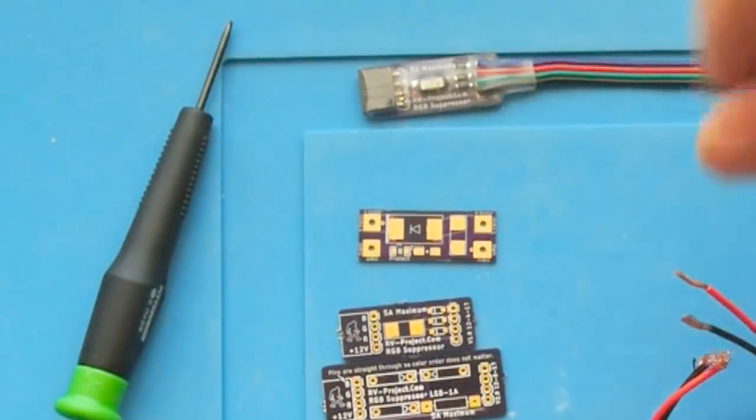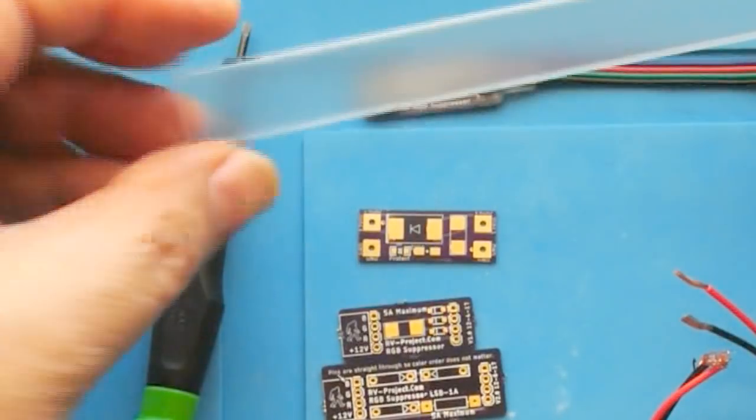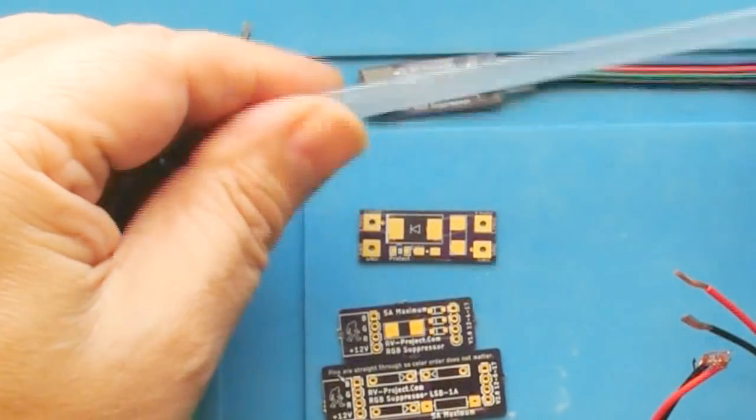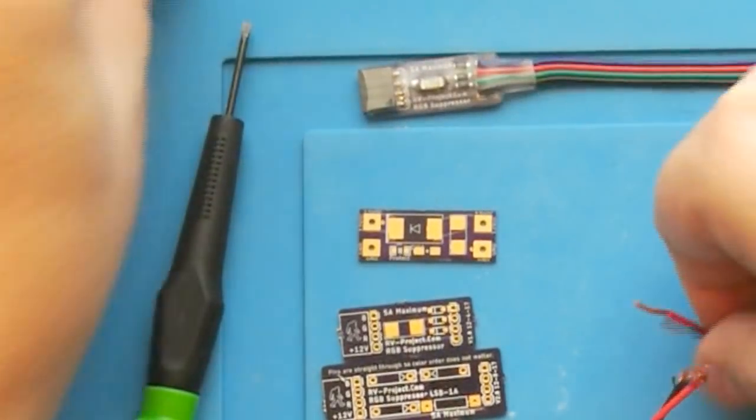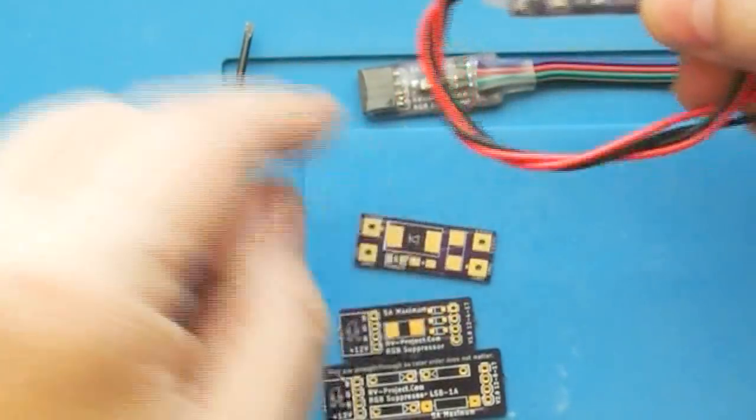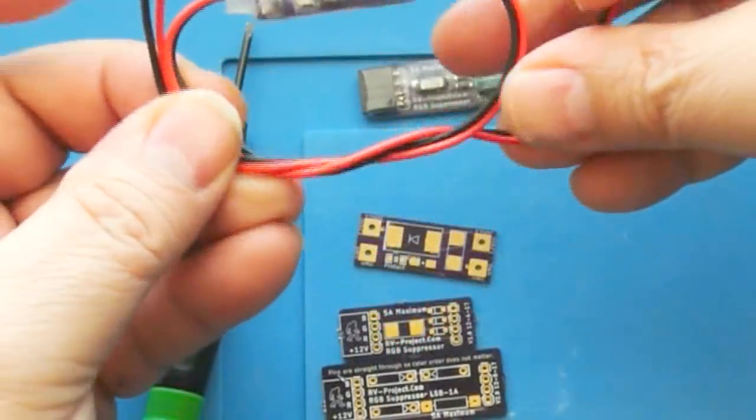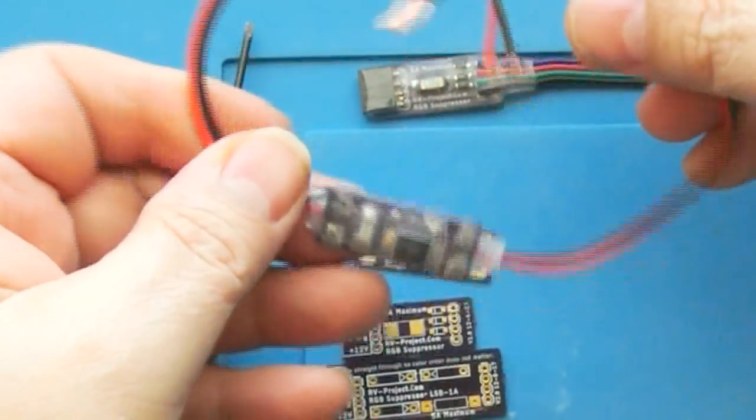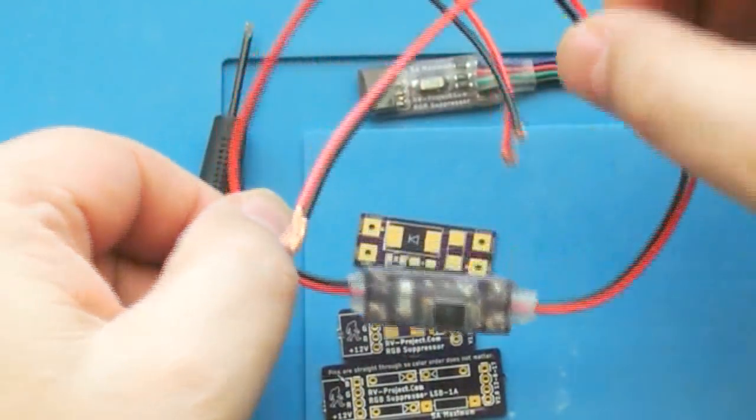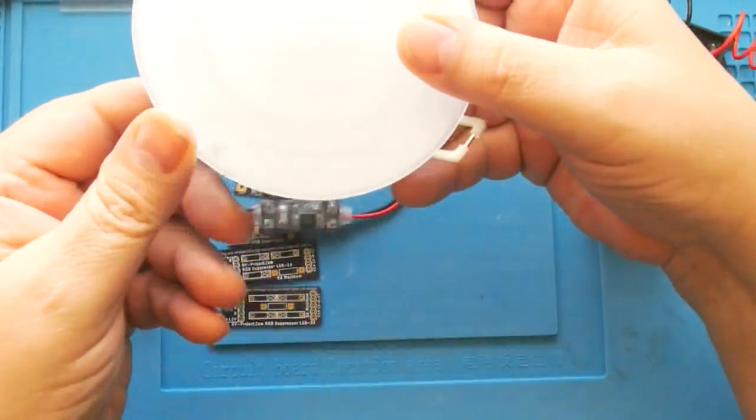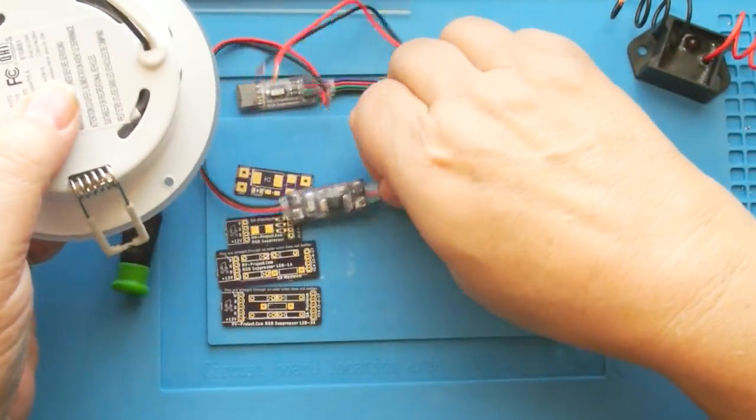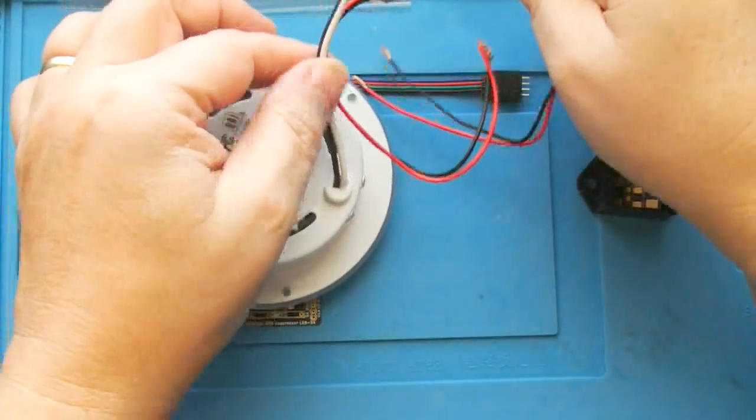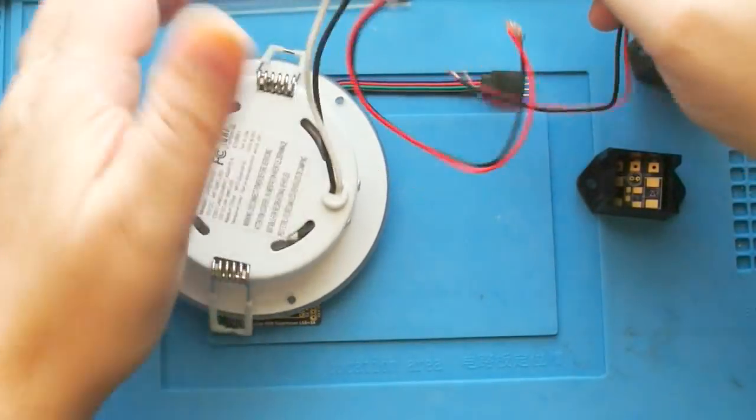When you're done building that and you put the leads on, we have this clear plastic heat shrink that you can put over that, and that's what this is. This is a completed version of this board here. This just goes in line with whatever device you're wanting to protect, for example a puck light like this. You could wire this in line with a puck light and it would work.